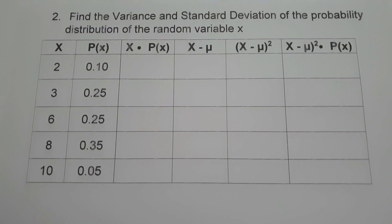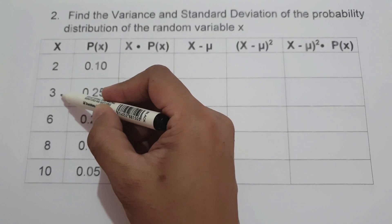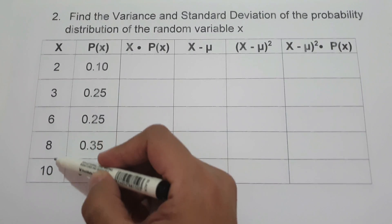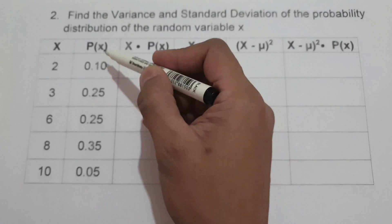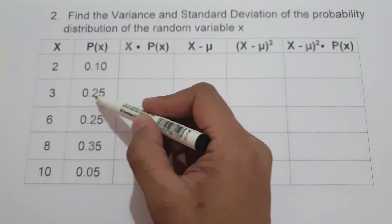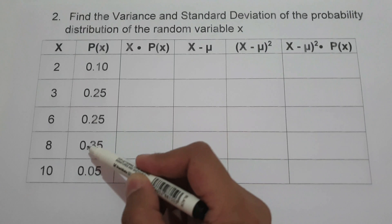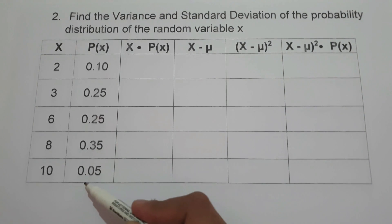On our last example, we find the variance and standard deviation of a probability distribution where the random variable x consists of 2, 3, 6, 8, and 10, with probabilities 0.10, 0.25, 0.25, 0.35, and 0.05 respectively.